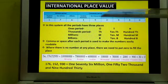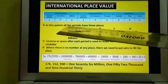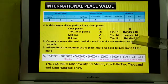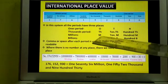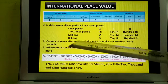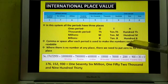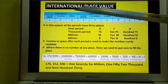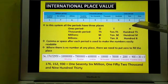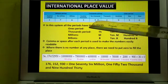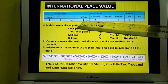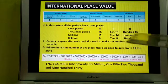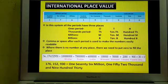Now we will understand the international place value system. In the international place value system, all the periods have three places. The ones period (O), thousands period (Th), ten thousands (10Th), hundred thousands (100Th), then the millions period: millions (M), ten millions (10M), hundred millions (100M), then the billions period: billions (B), ten billions (10B), hundred billions (100B). In the international system, each period has three places.